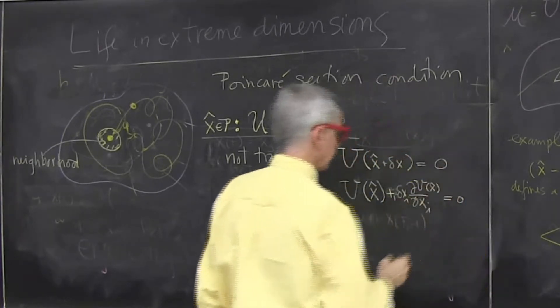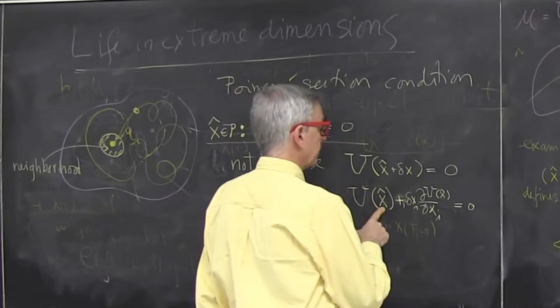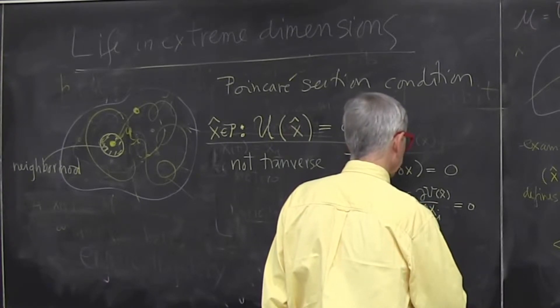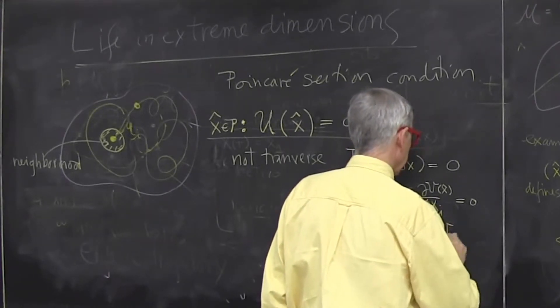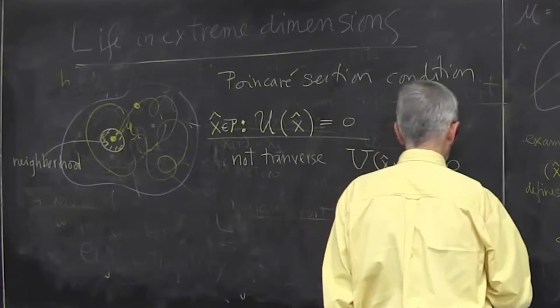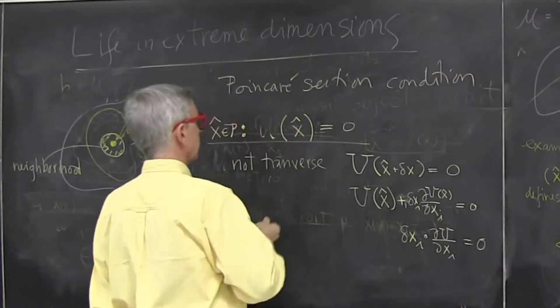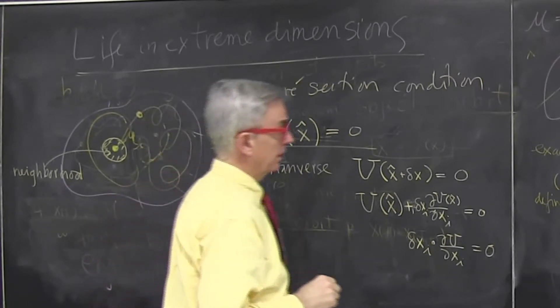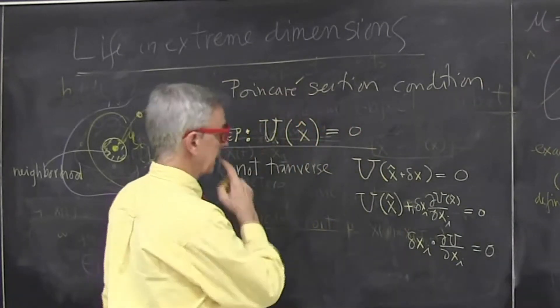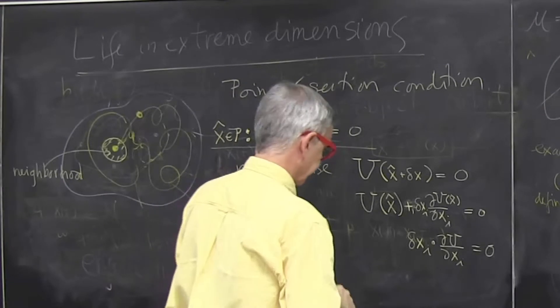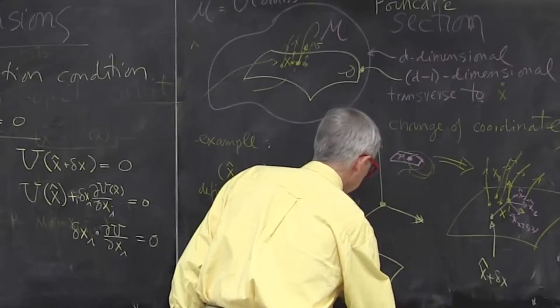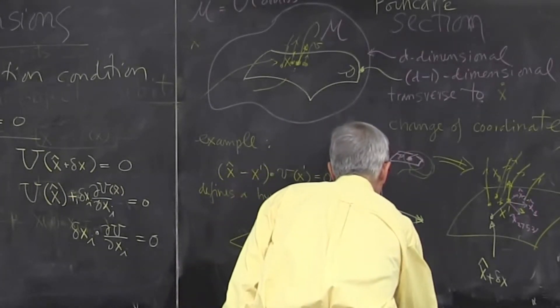that implies that this is some gradient of U evaluated at that point equals 0 up to linear order. But this is 0 by definition. A point is inside the Poincaré section if it satisfies dU/dx_i, the gradient of my condition U. I'm using curly either for sets or for operators, but we haven't gotten to any operators yet. Thanks for pointing out.